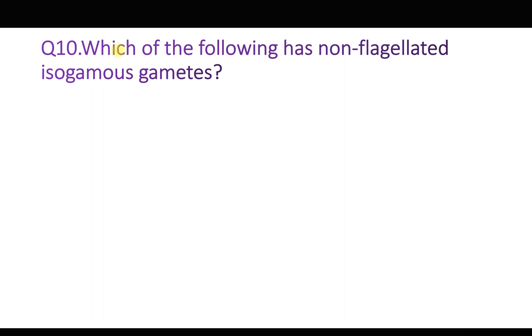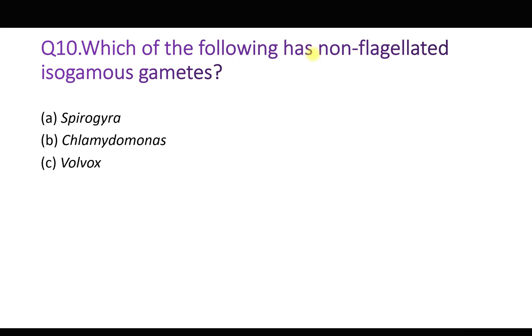Question number ten: Each of the following has non-flagellated isogamous gametes — option A: Spirogyra, B: Chlamydomonas, C: Volvox, and D: Fucus. Here Spirogyra is correct. Spirogyra is a green, filamentous, free-floating alga, and sexual reproduction is by production of non-flagellated isogamous gametes. So option A is correct.